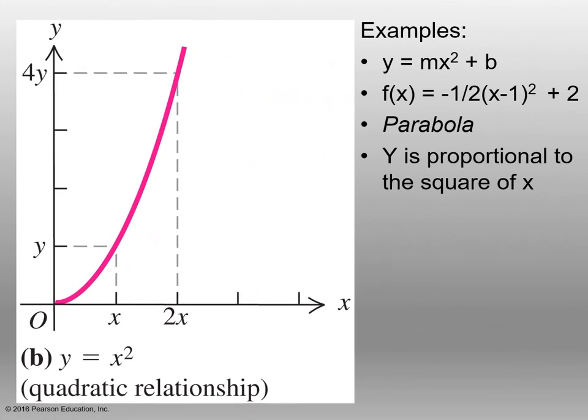An example of a graph showing a quadratic relationship: y equals mx squared plus b. The function f(x) equals negative one half times the quantity (x minus one) squared plus two. A parabola is the actual shape of a quadratic relationship, and y is proportional to the square of x.